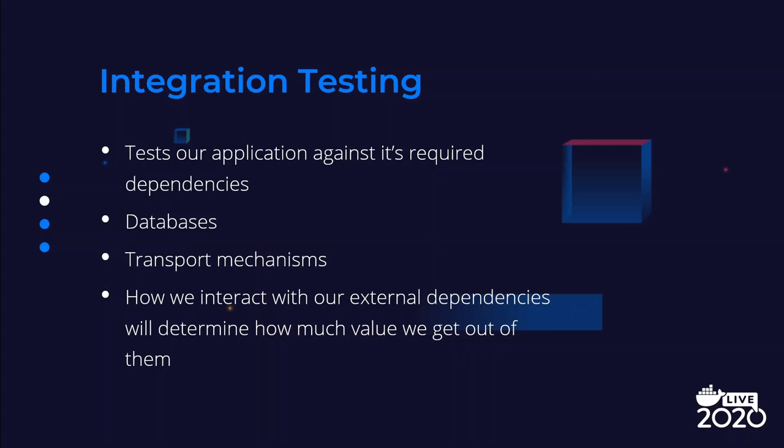We often assume that our database is going to behave how we think it is, or that our async messaging system is going to do exactly what we want it to do. But often therein are the bugs that are the most annoying and intricate to isolate and fix. How we interact with our dependencies will determine how much value we get out of them. And really, if we don't test that, then how can we be sure that we are interacting with them correctly?